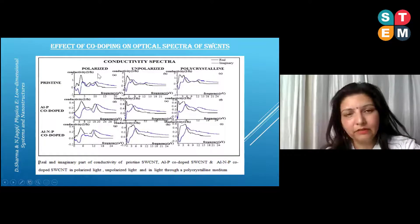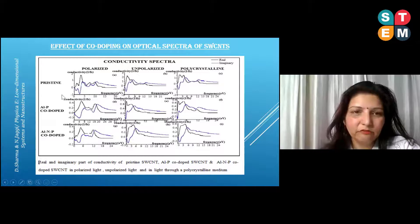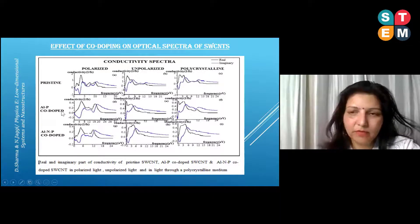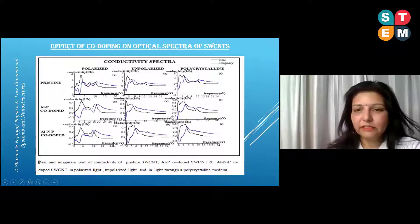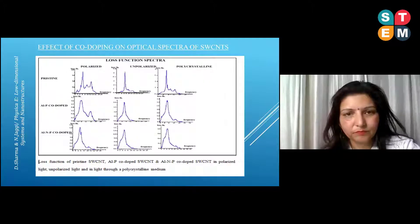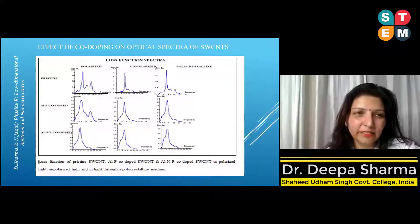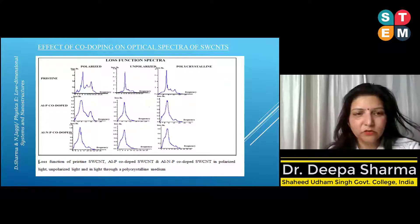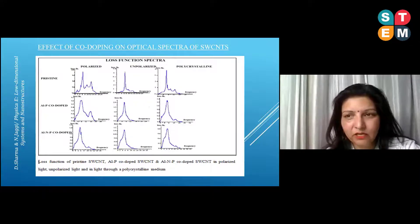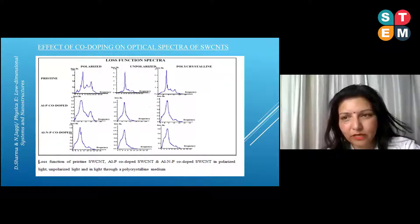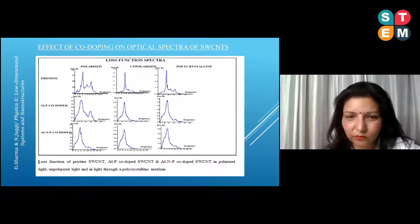Optical conductivity also changes when we co-dope the structure with aluminium and phosphorus and additionally with nitrogen — the variation is quite visible. Then I simulated the loss function, and this study has been published in Physica E: Low-Dimensional Systems and Nanostructures. There are substantial changes in the value of the loss function when we co-dope the pristine single-walled carbon nanotube with aluminium-phosphorus and aluminium-nitrogen-phosphorus.